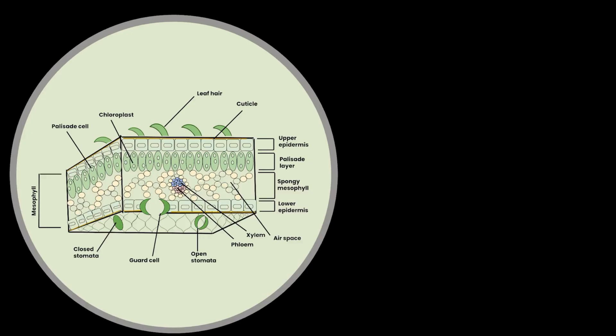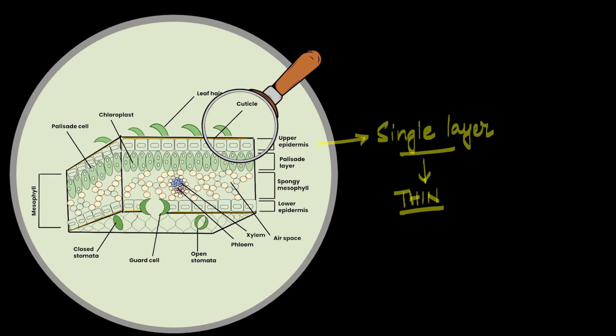If we look closely into these two layers, we will see that they are made of a single layer of cells. Single layer which means they are thin, just how we mentioned. They are also clear or colourless.